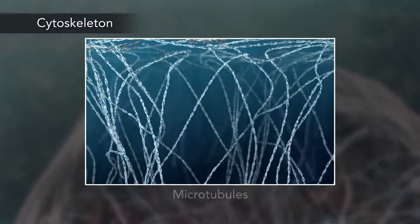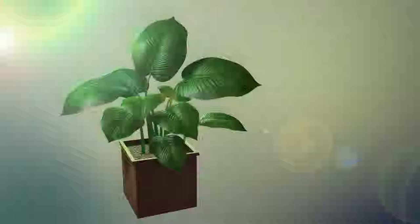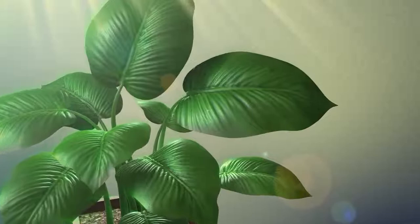Some organisms, such as plants, that are photo-autotrophic, meaning they capture sunlight for energy, have cells with an organelle called a chloroplast. The chloroplast is where photosynthesis happens. It's green because it has a green pigment called chlorophyll.